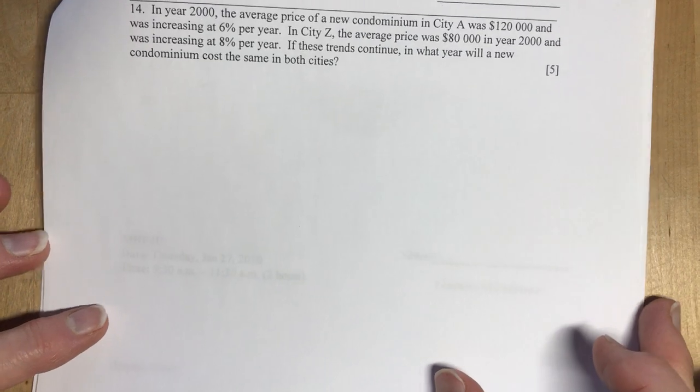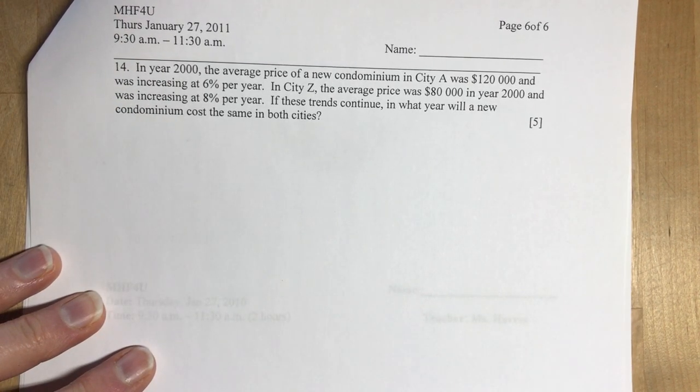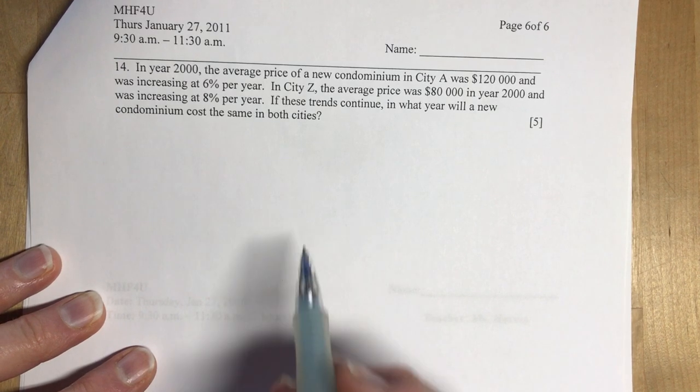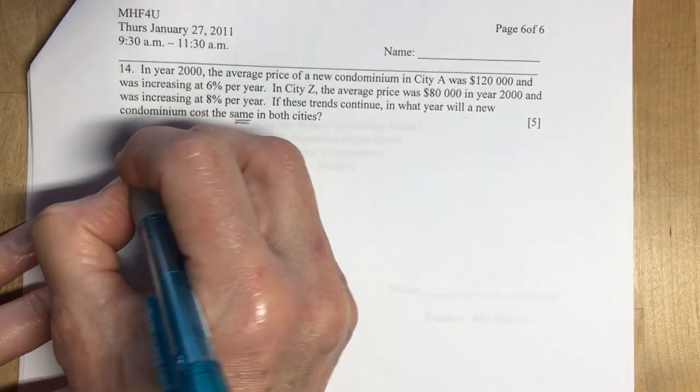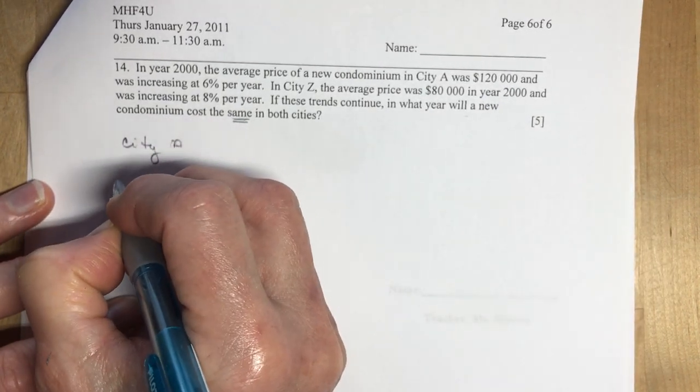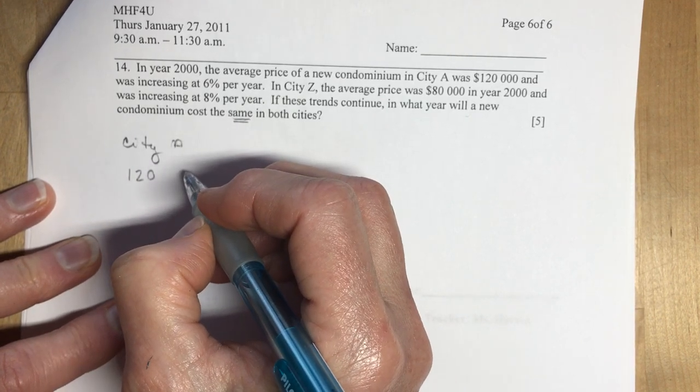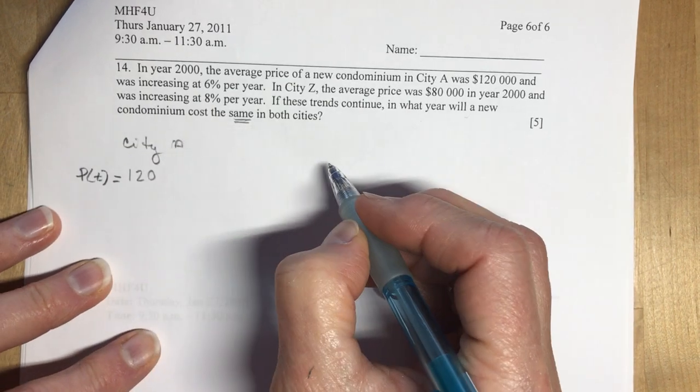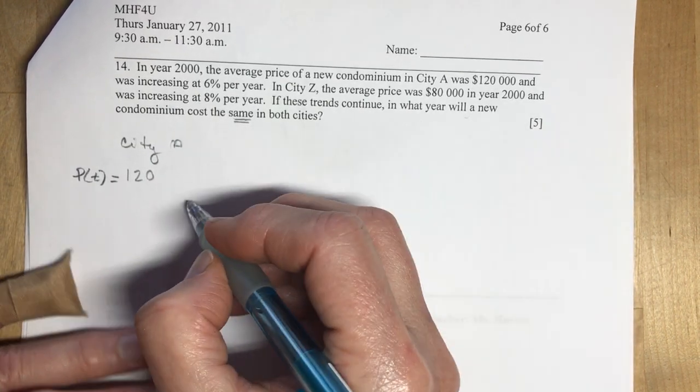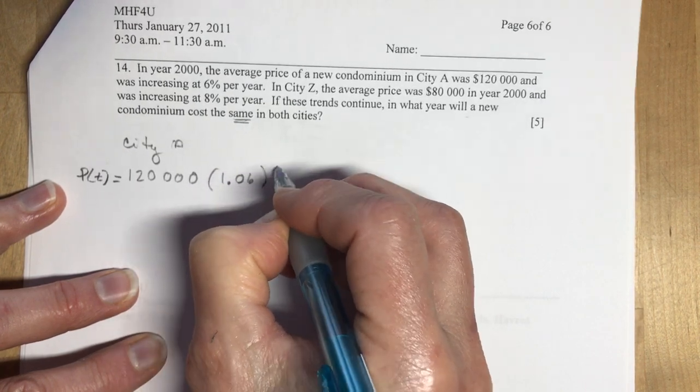We're in the last question. In the year 2000, the average price of new condominium in City A was $120,000 and was increasing at 6% per year. You can read the rest of that and I'm going to tell you. What we want to do is we want to write two equations. And we're going to set them equal to each other because we want to know when they're going to be the same. So, City A starts at $120,000. And we're talking here about price. So, let's call it price at time t. I know your teacher might want a let statement, let p at t be the price at time t. So, $120,000 and it's growing at 6% a year. So, that's 1.06 to the power of t.